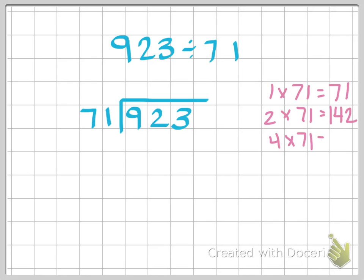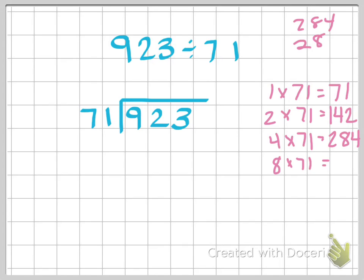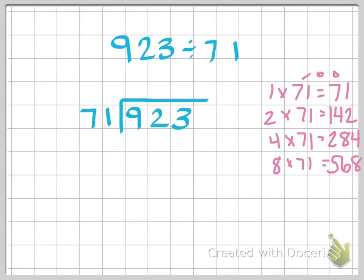If we continue to double our numbers, we can say 4 times 71 is 284. I would actually skip over to 8 times 71 and then double that number. So now we're thinking of 284 plus 284, and that gives us 568. It's important that you have some of those guidelines whenever we start into our math problem, just so that we know some of the multiples right off the bat.